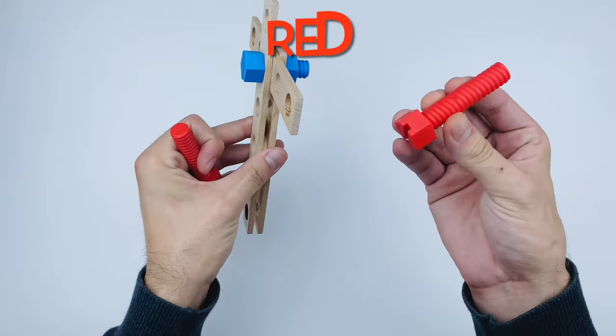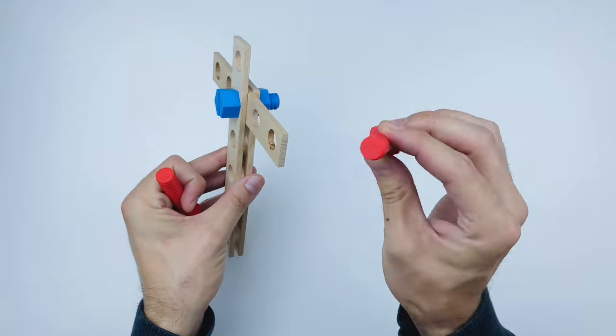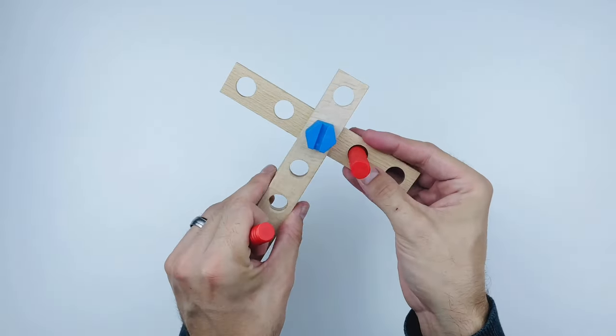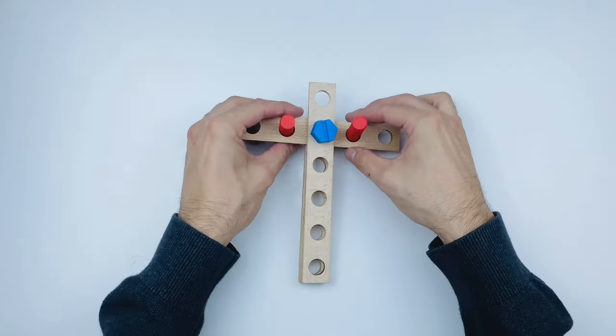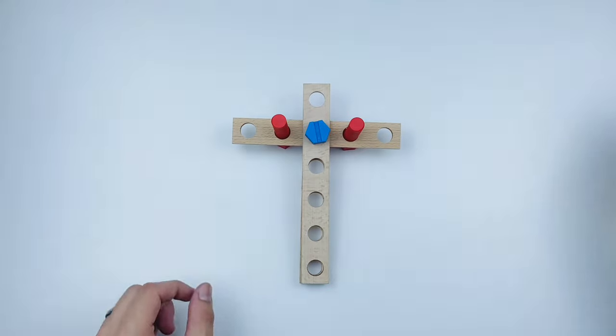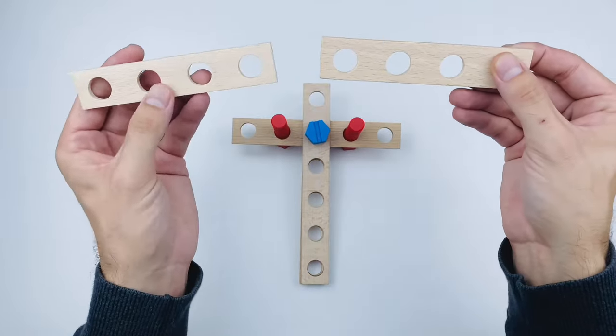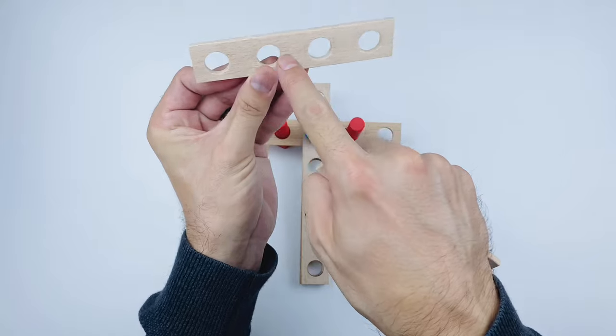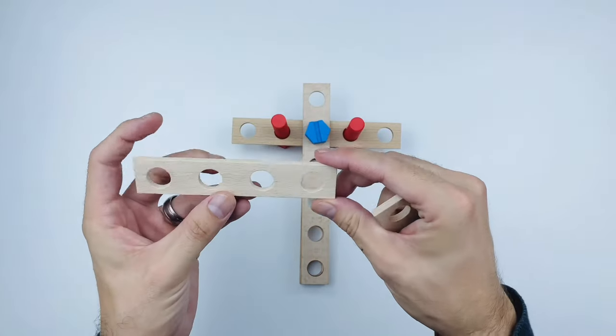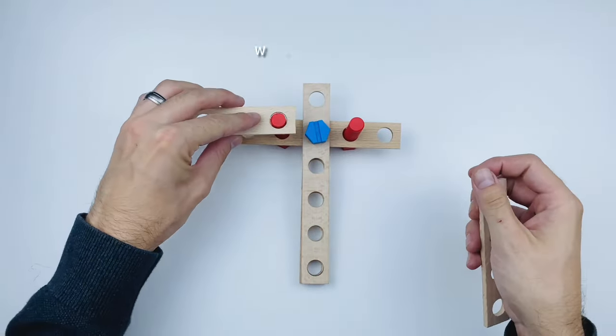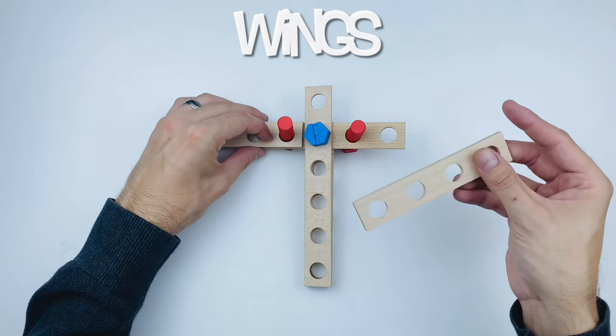Now we'll take two red bolts and put them on either side of the blue bolt. Then we're going to need two wooden pieces with four holes each. One, two, three, four. This will start making up the wings of the plane.